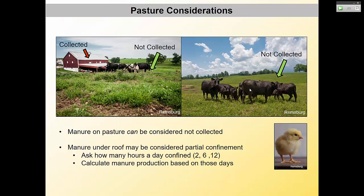You might also deal with partial confinement, where dairy cows are under the barn roof for feeding or shelter part of the time — that portion is collected — but out on pasture it's not. You have to ask the farmer how many hours a day they're under roof — one hour, two, twelve, or locked in for winter — and calculate an average of what will be collected under that barn. You then have to figure out what to do with it: export off the farm, land apply to crop fields, or apply to pasture.